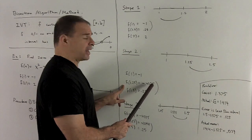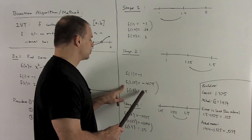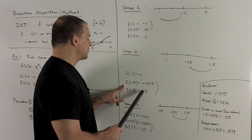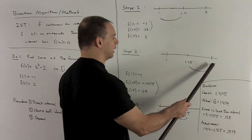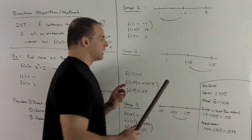So the next interval that I choose is going to be the one with the positive endpoint. So we're going to use 1.5 since that gives me 0.25. So we go over to here.